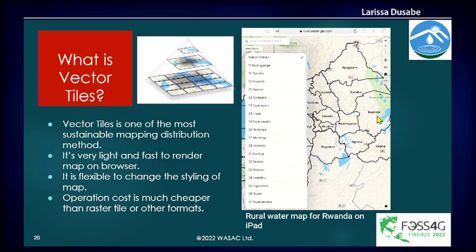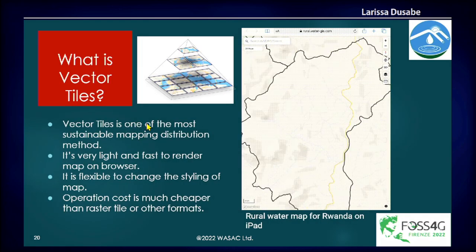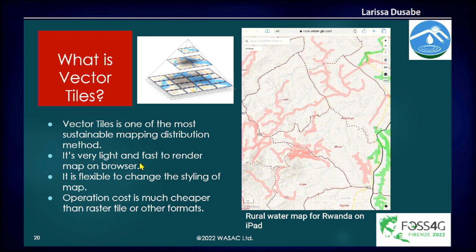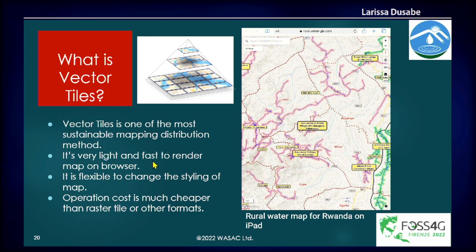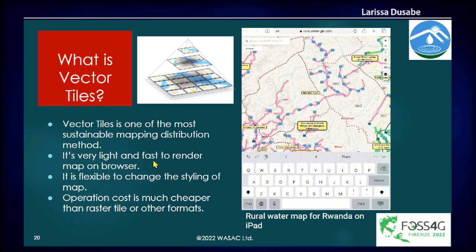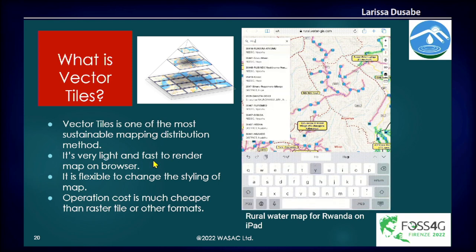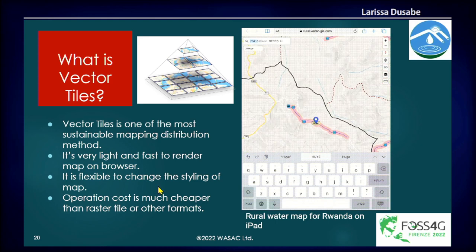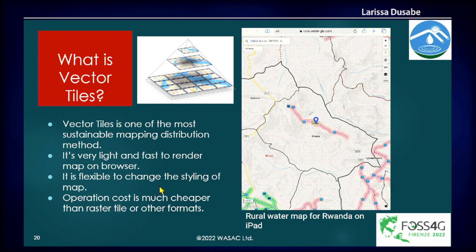Why did we choose vector tiles? Because they are light and fast to render maps on a browser, flexible to change the styling of maps, and the operation cost is much cheaper — we have no operation cost.